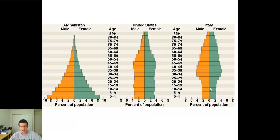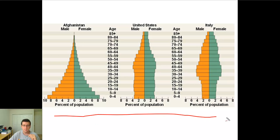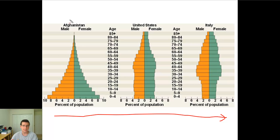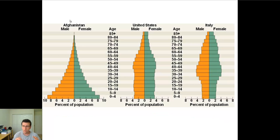Interestingly, populations tend to shift from one end to the other as they become more developed. The population pyramid on the left is typical of an underdeveloped area, and the population on the right is typical of an overdeveloped population. So let's look at society trends and see how this changes throughout time.